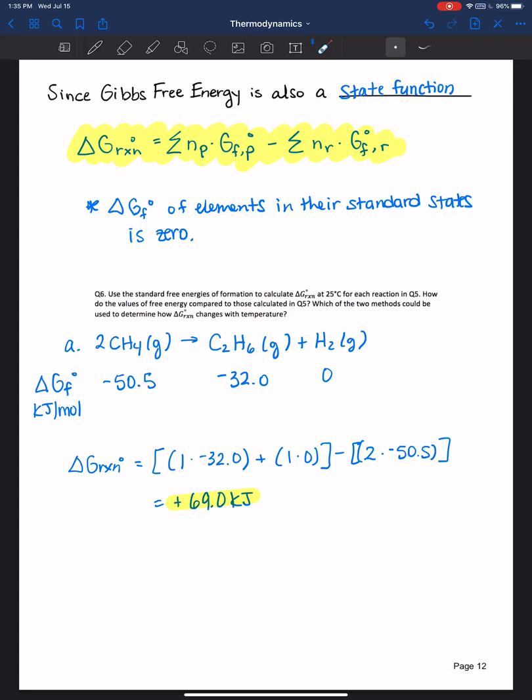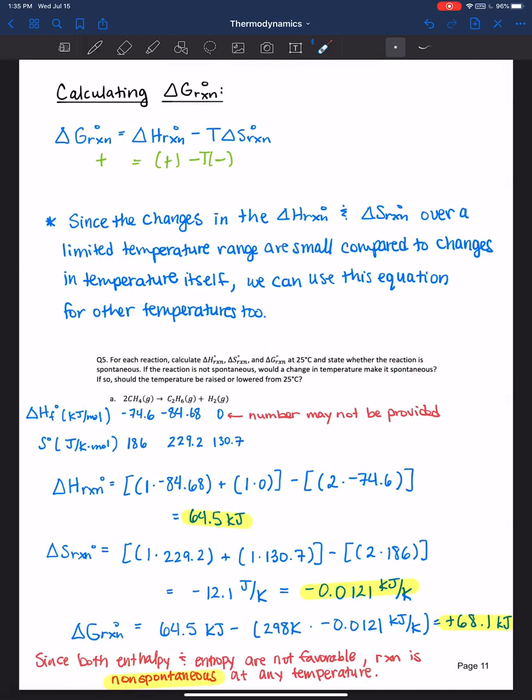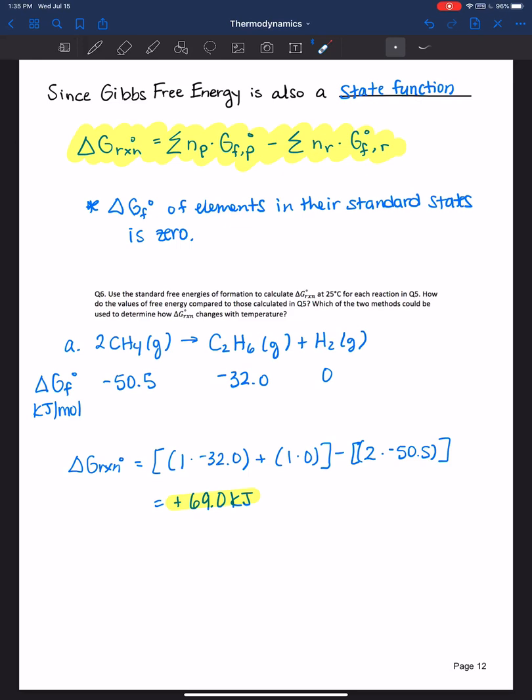What you'll notice here with this particular equation is that temperature is not a part of it. As a chemist, we like to change the temperature that we run our reactions in to see how it'll change the outcome, see if it optimizes it. Therefore, it is more useful to use this equation here where we can plug in different temperatures than it would be to use this equation. The method that we worked out in question five on the previous page can be used to determine the Gibbs free energy of a reaction with temperature changes.